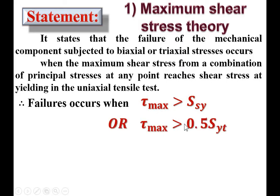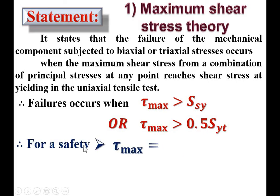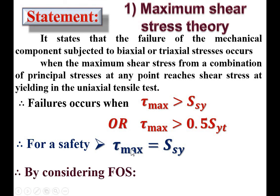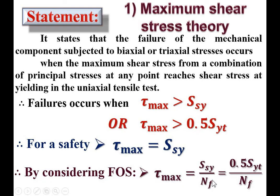Failure occurs when tau_max is greater than or equal to 0.5 × Syt, where Syt is the yield strength in tension. The yield shear stress is always half of the yield tensile strength. For safety, tau_max should be up to Ssy (yield shear strength). If it exceeds Ssy, the material will fail. When a factor of safety is given, tau_max = Ssy / Nf, so Ssy = 0.5 × Syt / Nf.